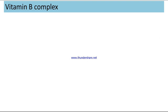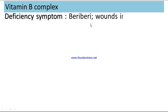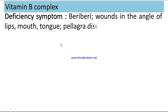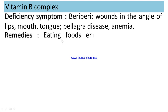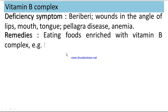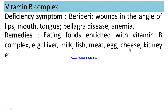Vitamin B complex: Deficiency symptoms include sores at the angle of lips, mouth, and tongue, Pellagra disease, and anemia. Remedies: eating foods enriched with Vitamin B complex, such as liver, milk, fish, meat, egg, cheese, kidney, etc.